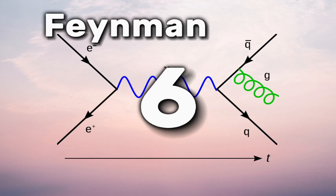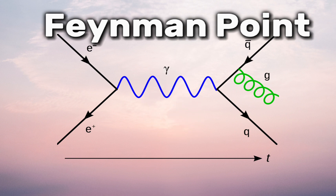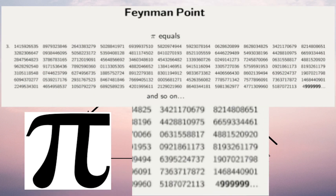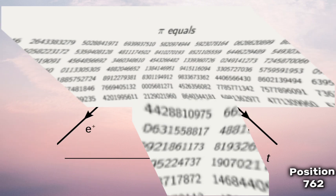6. Feynman Point. The Feynman Point is an interesting mathematical curiosity. It refers to the sequence of six consecutive nines in the decimal expansion of the mathematical constant pi, at position 762, a discovery that showcases the intriguing patterns within pi's decimal representation.